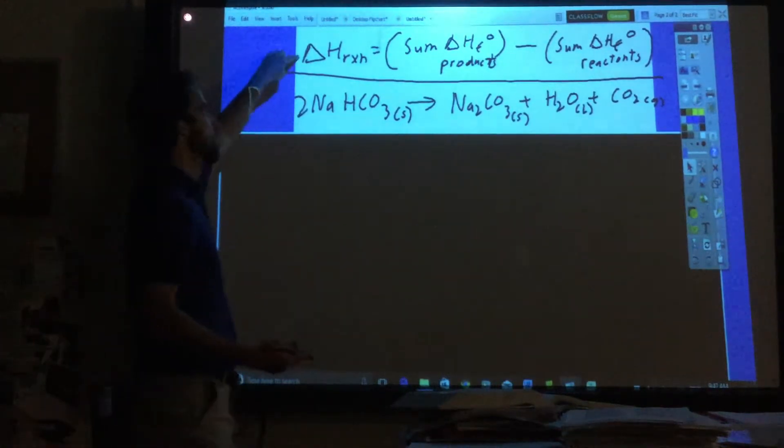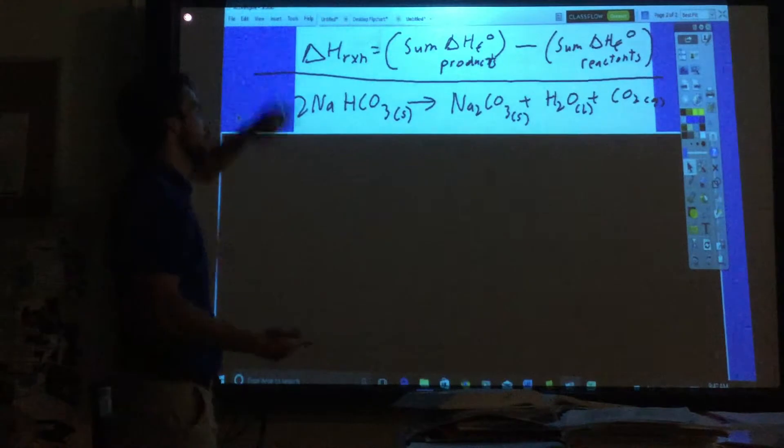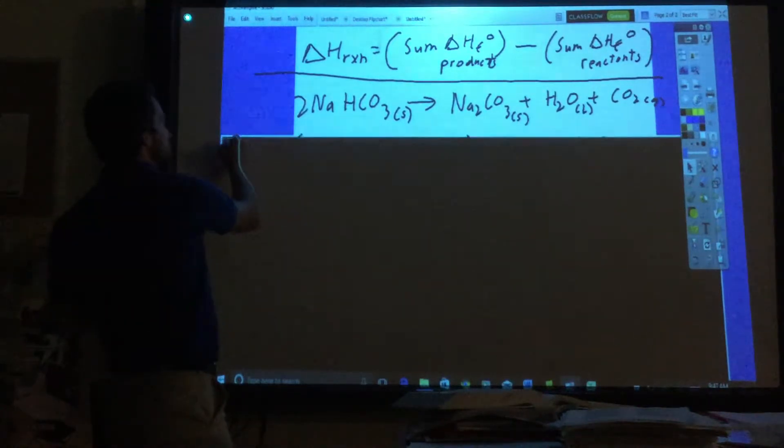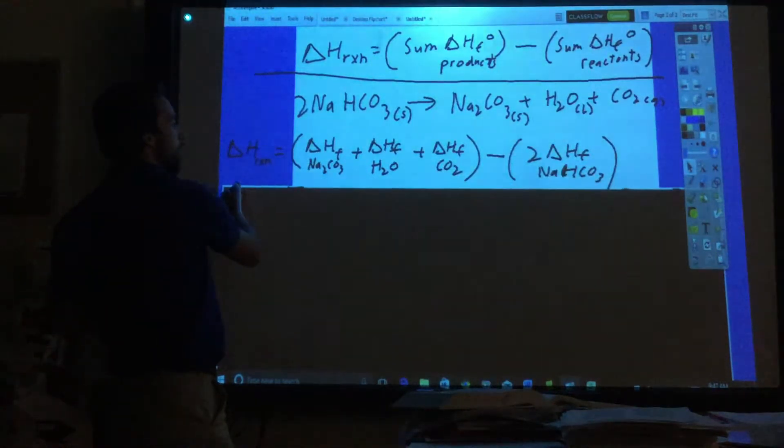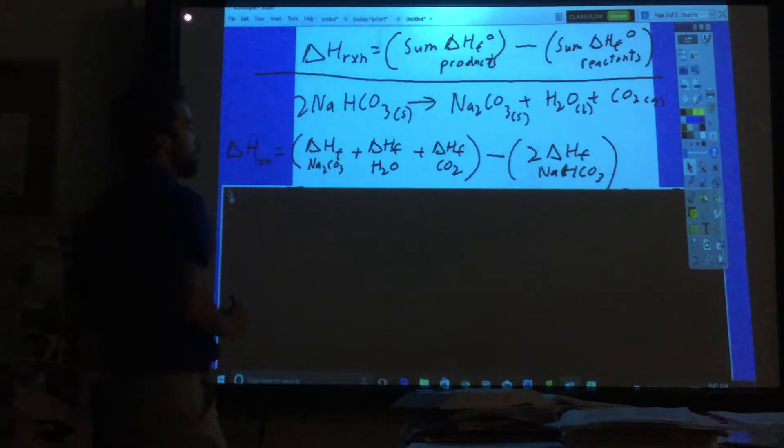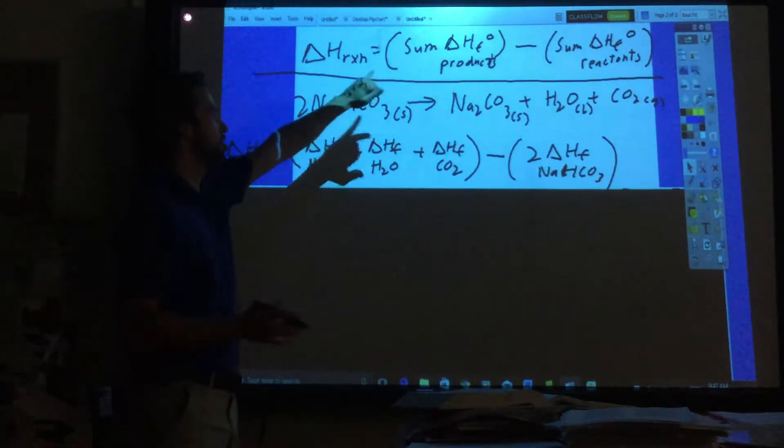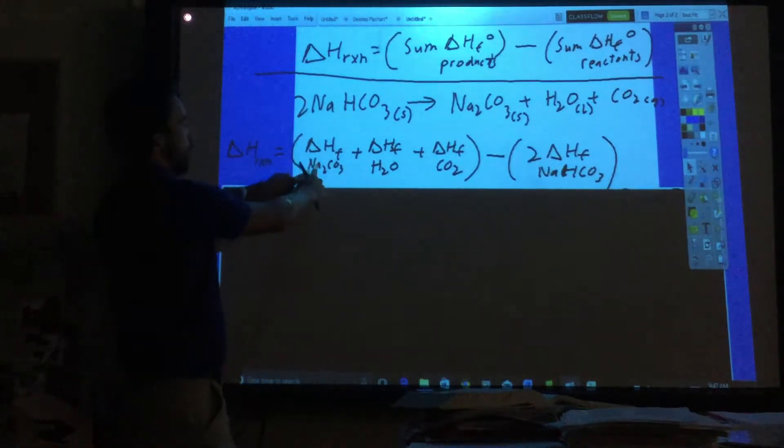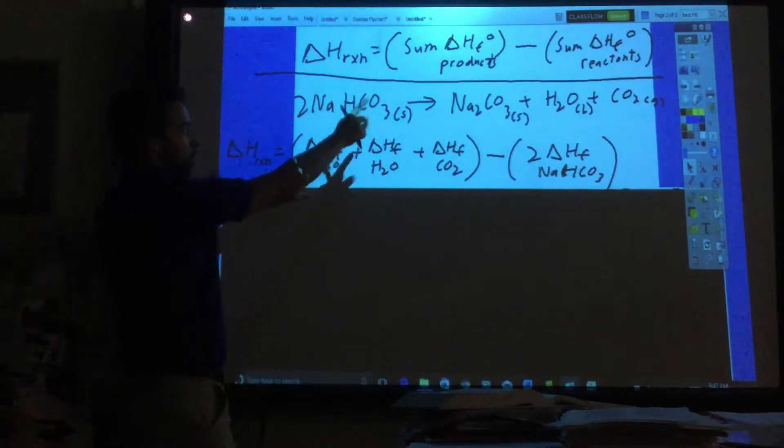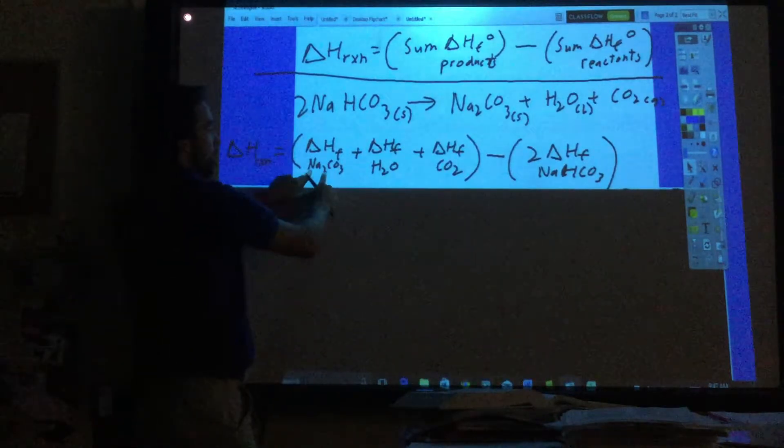We can use that table. If we plug it into this equation, first when we say sum of the Delta Hfs, we're going to look up Delta Hf for the products first - sodium carbonate, water, and CO2.